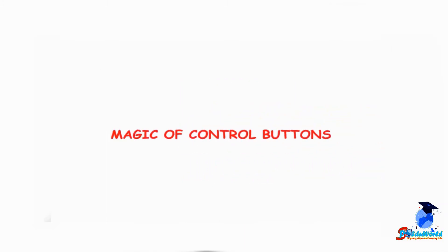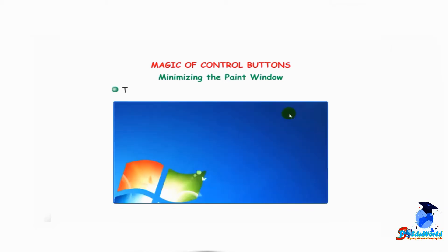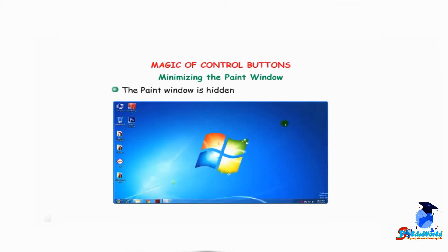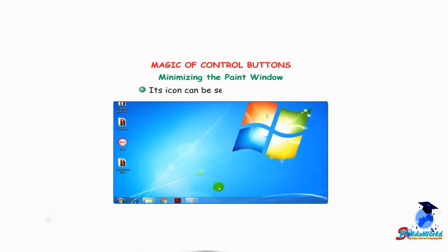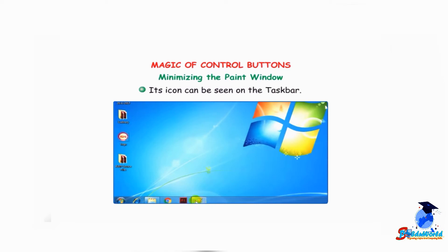Magic of control buttons. Minimizing the paint window: click on the minimize button. The paint window is hidden from the main screen. Its icon can be seen on the taskbar.